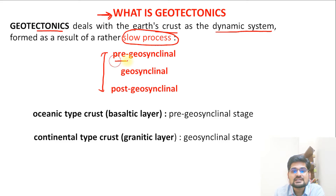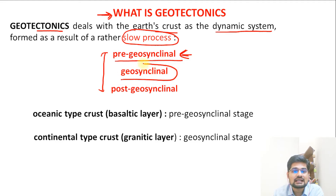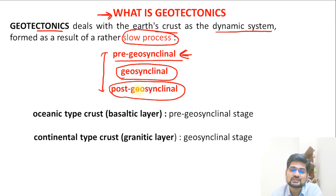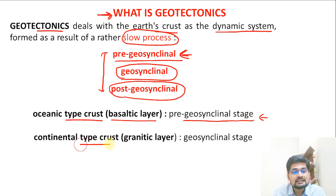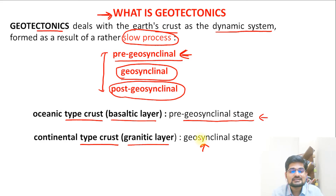There is a pre-geosynclinal phase when the geosynclines are not yet there, then the phase of geosynclinal formation, and then a post-geosynclinal formation phase. Oceanic type of crust — the basaltic layer — represents the pre-geosynclinal stage, while continental type of crust — the granitic layer — represents the geosynclinal stage.